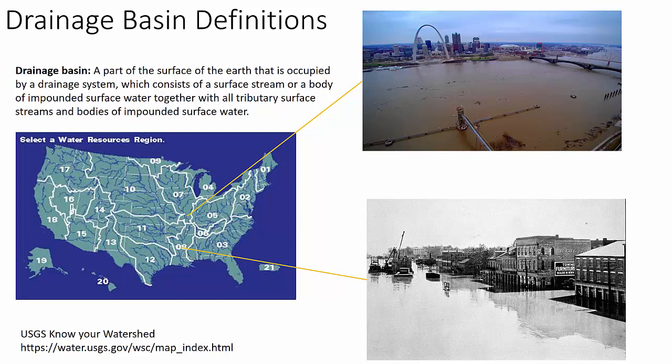There are about 21 water resource regions in the continental United States, including Puerto Rico. This consists of surface streams and bodies of impounded surface water together with all tributary surface streams. Notice the Mississippi River, which covers over half the United States, is broken up — the Missouri River, the upper Mississippi, etc. — each with a number, the beginning of the watershed zip code. The upper and lower Mississippi River systems are all connected; flooding in one often leads to downstream flooding in another, as happened in the 1993 flood of St. Louis and the 1921 flood down around the Mississippi-Louisiana border.